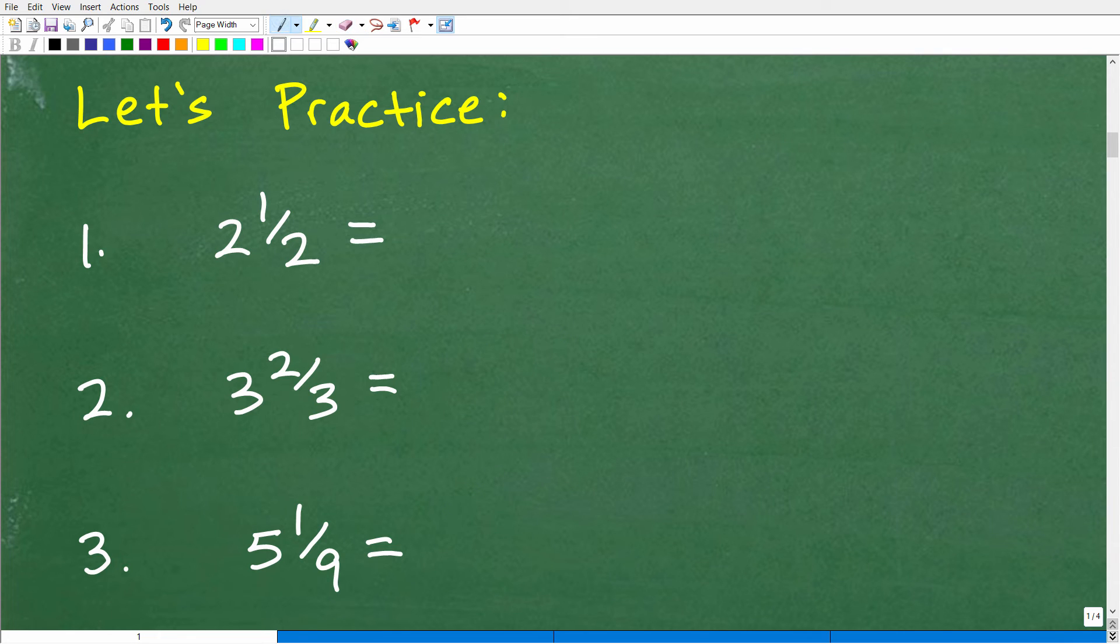All right, so did you pause the video and do these problems? It's better that you do the problems instead of watch me do the problems first. But I'm going to go ahead and answer this right now. So let's get to it. So two and one-half, let's write this mixed number fraction as an improper fraction. So it's going to be two times two, which is four, plus one is going to be five-halves, okay? So we got that right. Let me give you a nice little check mark.